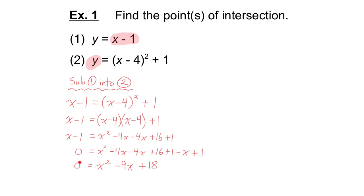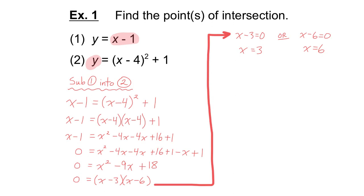Now I can solve this equation. Can I factor it? It looks like a simple trinomial — can I think of two numbers that multiply to positive 18 and add to negative 9? Negative 3 and negative 6. Now that I've factored, I can use the zero product property: if (x minus 3)(x minus 6) equals 0, then either x minus 3 equals 0, giving x equals 3, or x minus 6 equals 0, giving x equals 6. It looks like we're going to have two different points of intersection.